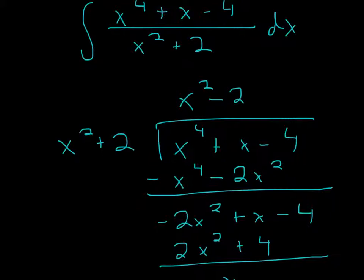For long division, what you do is you put the numerator inside, the denominator outside, and then just start the process. The first thing you do is you try to get rid of the x to the 4th power. So you have x squared. x squared times x squared is x to the 4th. x squared times 2 is 2x squared.